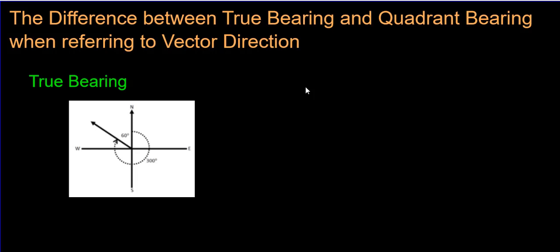Hi folks. This is the second video on vectors that I'm doing. This one's just showing how you can show the direction of a vector using two different ways. One is called the true bearing, and the other one is called a quadrant bearing.